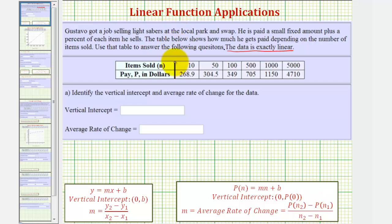Let's use these first two ordered pairs. The average rate of change would be equal to the change in the pay, which is 304.5 minus 268.9, divided by the change in the number of items sold, which is 50 minus 10. This comes out to 35.6 divided by 40, which is 0.89. So the average rate of change is 0.89, which tells us he makes 89 cents for every item he sells.